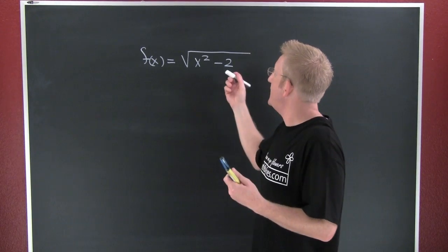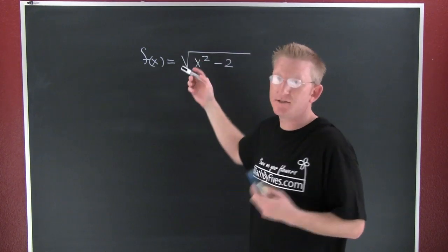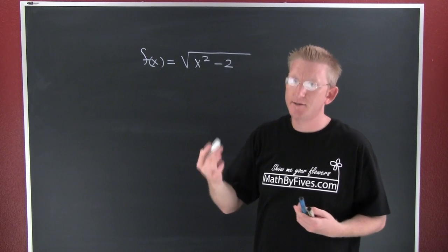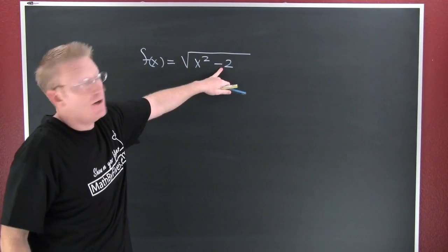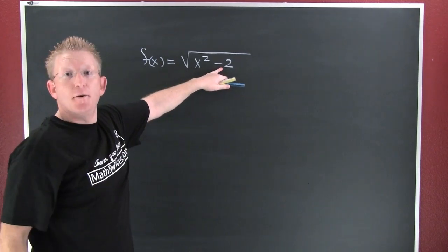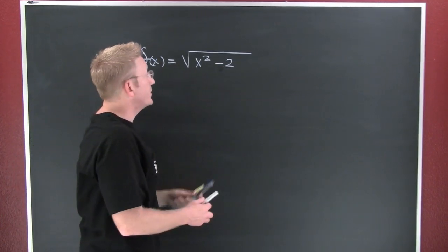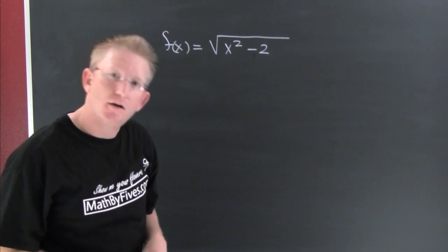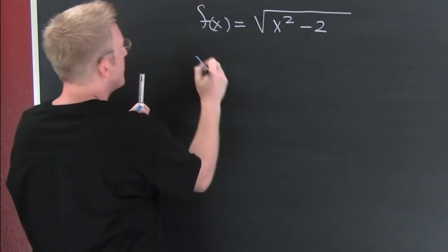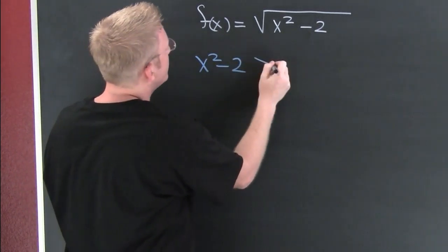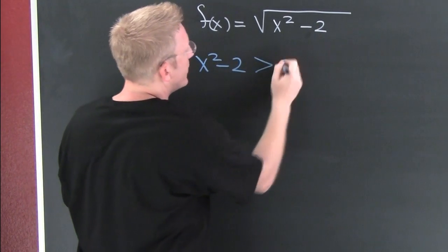So then, here my index is 2 because it's not written there, it's assumed to be a 2. What I need to do is I need to find out where this radicand is bigger than 0. And how am I going to do that? I'm going to ask it. I'm going to be like, oh radicand, where are you bigger than 0?